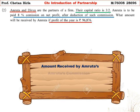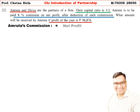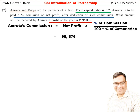Amount received by Amruta = Amruta's commission plus Amruta's net profit share. Step 1 — Amruta's commission: Since the question says 'after deduction of such commission', Commission = net profit × rate ÷ (100 + rate) = 96,876 × 8 ÷ 108 = Rs. 7,176.